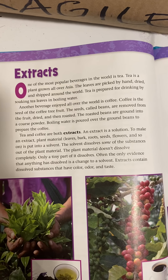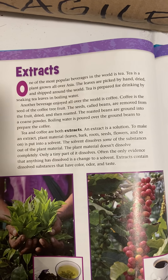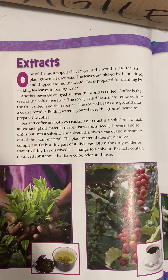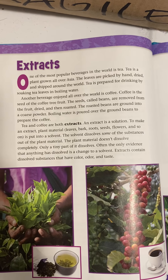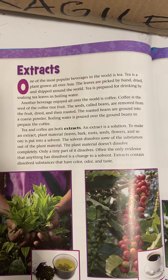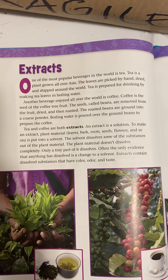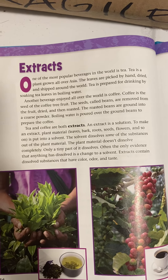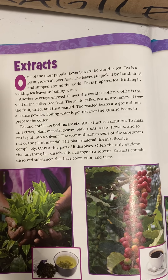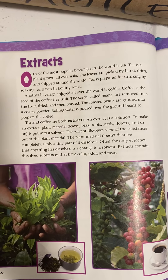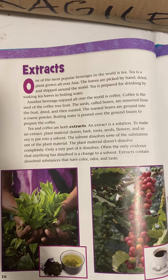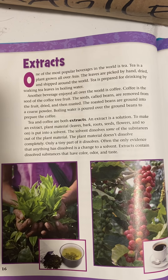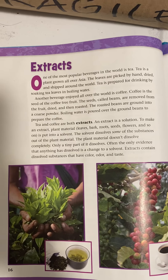The solvent dissolves some of the substances out of the plant material. The plant material doesn't dissolve completely; only a tiny part of it dissolves. Often, the only evidence that anything has dissolved is a change to the solvent. Extracts contain dissolved substances that have color, odor, and taste.